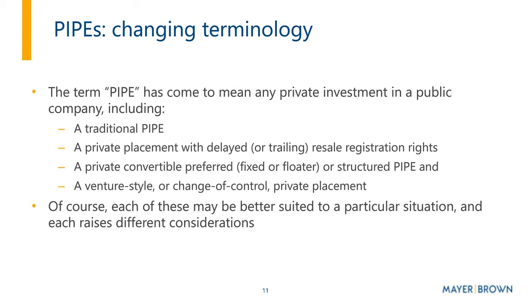You can have a traditional PIPE where common stock is sold to accredited investors at a fixed price. You can also have a private placement with delayed or trailing resale registration rights, where the company commits to filing and having the registration statement declared effective by the SEC within a negotiated time post-closing. There can also be structured PIPEs involving preferred, convertible preferred, convertible debt, and warrants. These are typically more heavily negotiated and may involve a conversion price subject to adjustment, meaning the issuer may bear some market risk.